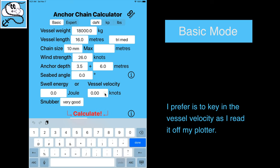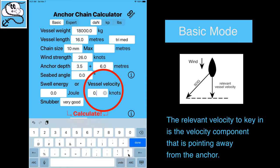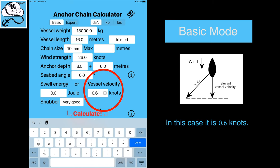I prefer to key in the vessel velocity as I read it off my plotter. The relevant velocity to key in is the velocity component that is pointing away from the anchor. In this case, it is 0.6 knots.